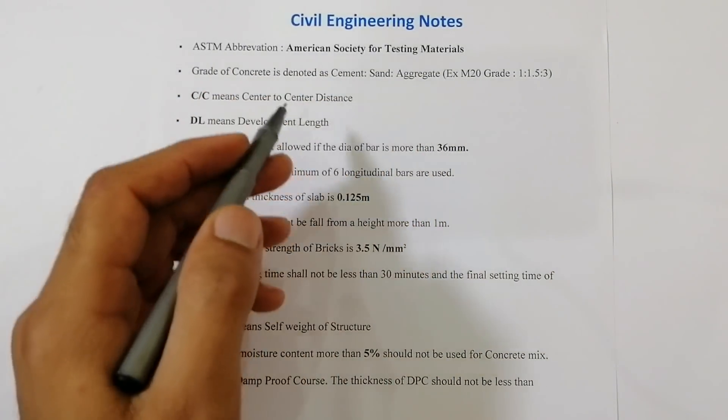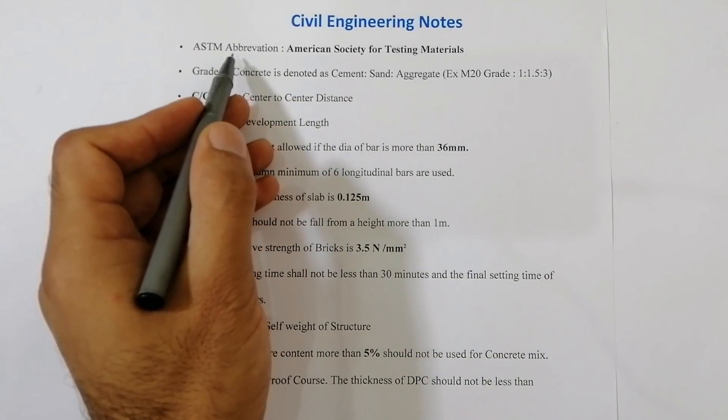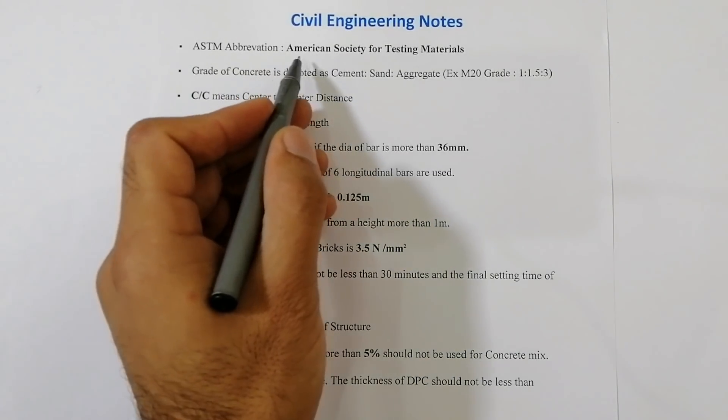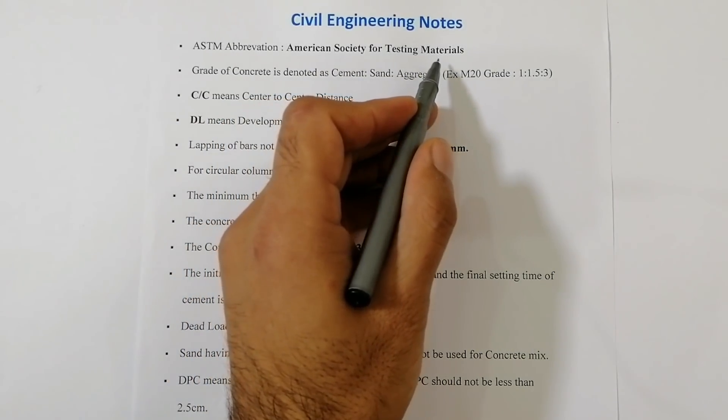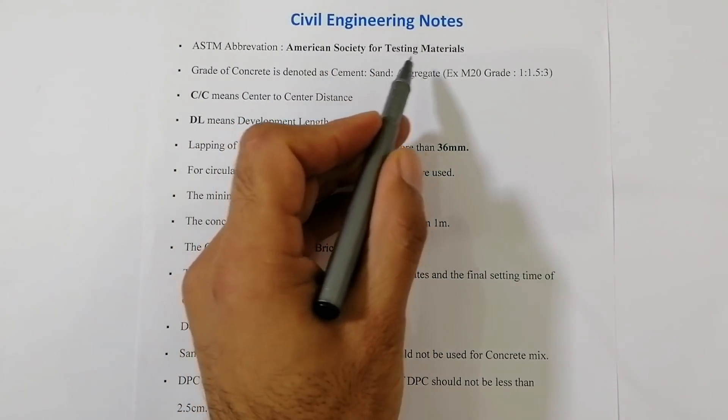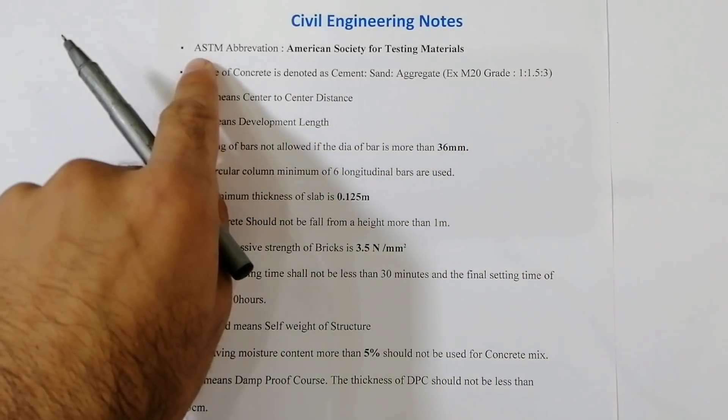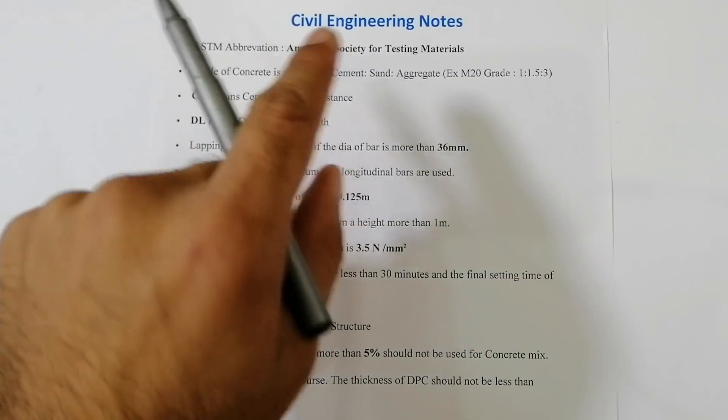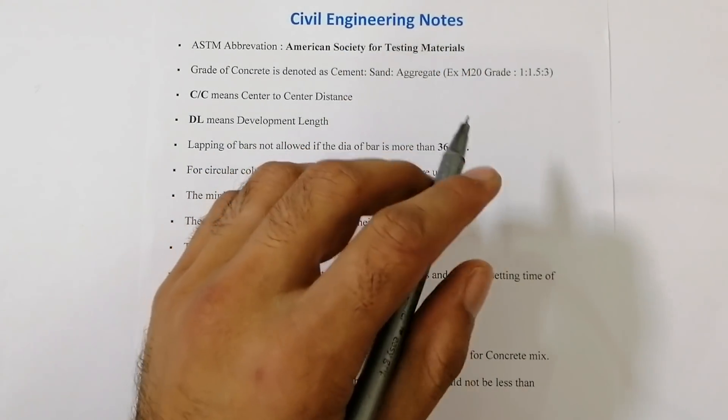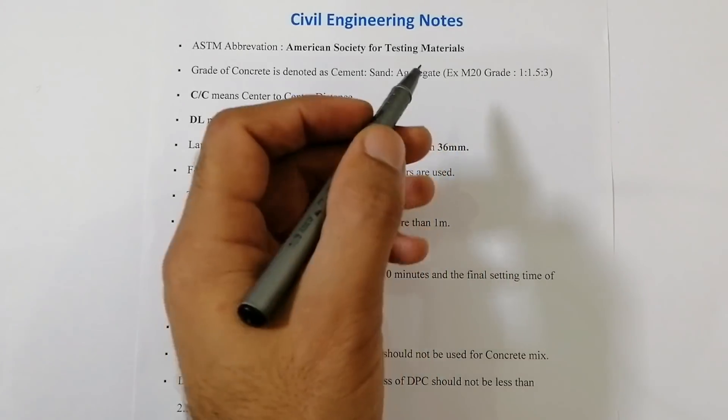The first one in civil engineering notes: ASTM. What is the abbreviation or acronym of ASTM in civil engineering? ASTM stands for American Society for Testing Materials. This company is in America. In different interview questions they often ask this question - what's the abbreviation of ASTM? It stands for American Society for Testing Materials, where they test all the materials, their strength, and important information for materials.